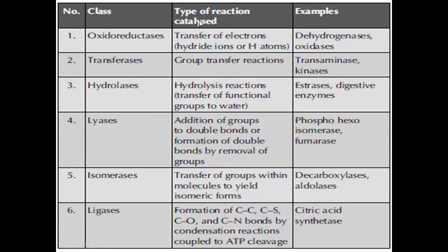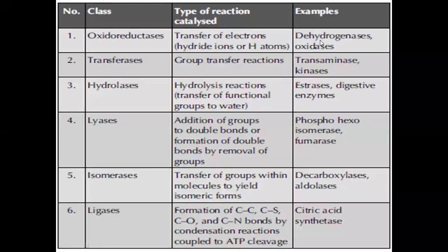Looking at the classification table — class, type of reaction catalyzed, and examples. Class one is Oxidoreductases: they catalyze the transfer of electrons, that is hydride ions or hydrogen atoms. Examples of oxidoreductase enzymes are dehydrogenase and oxidase.